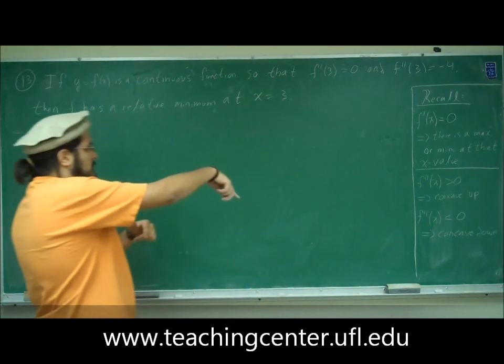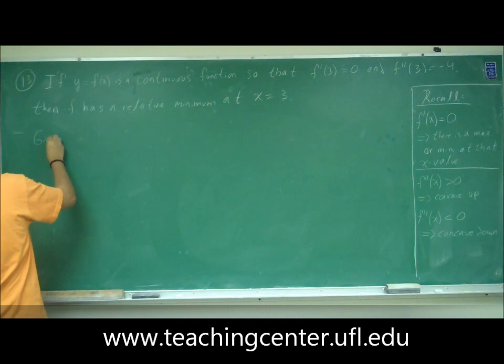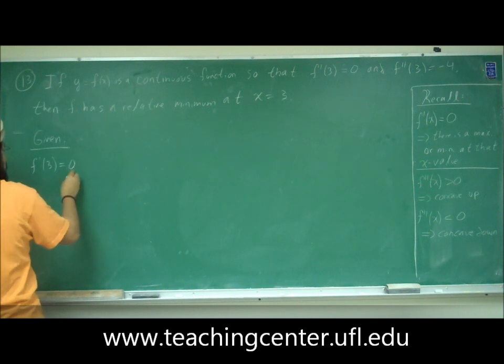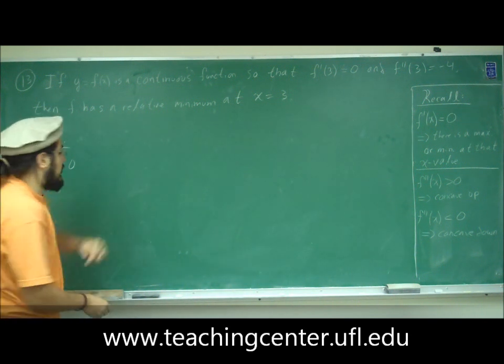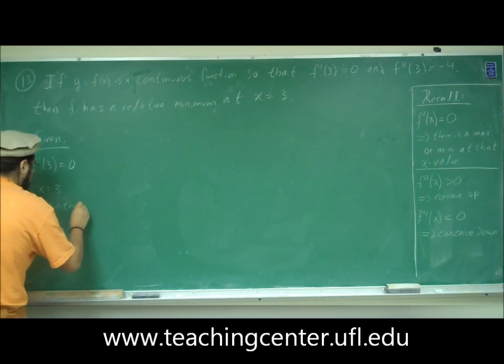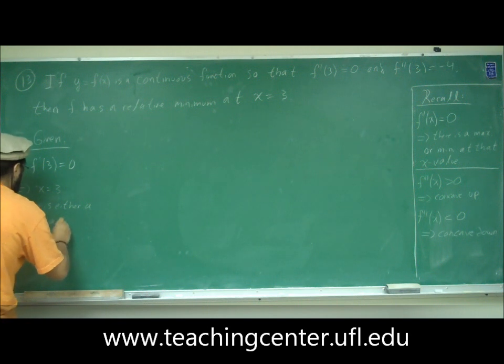Okay, so with that information given, let's come back to what they give us. So given that f prime of 3 equals 0, this implies that at x equals 3, two things can happen. There's either a min or a max.